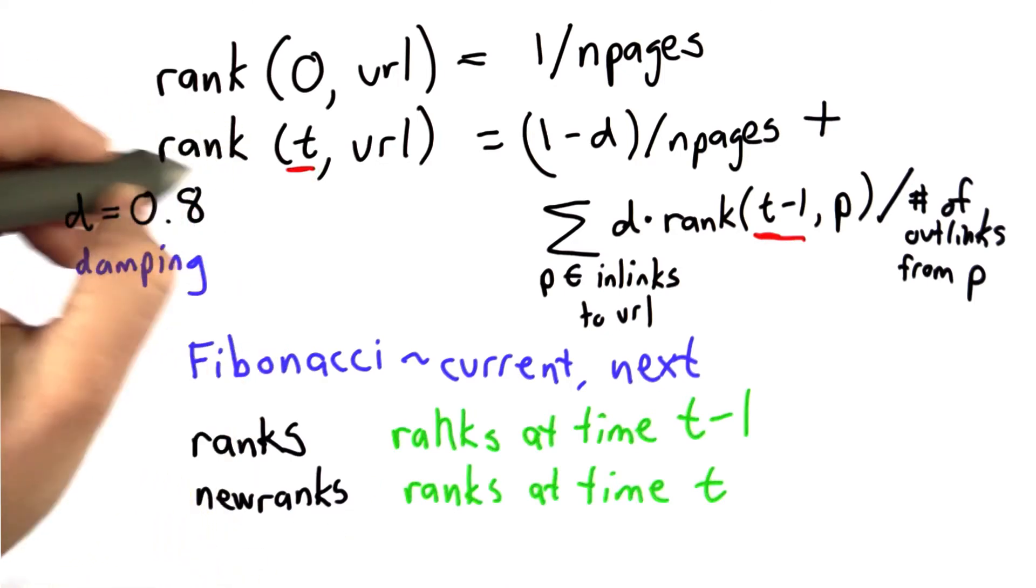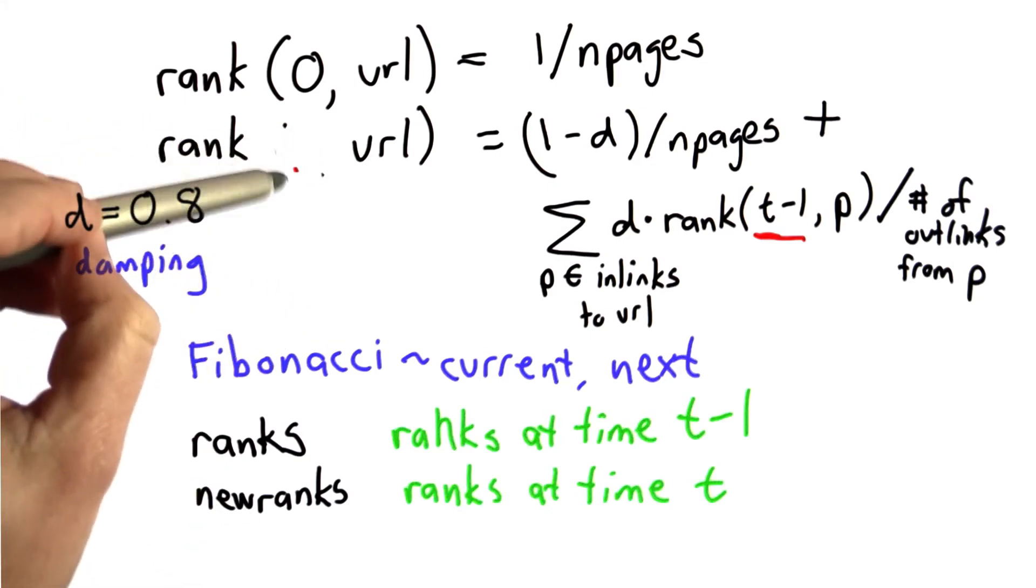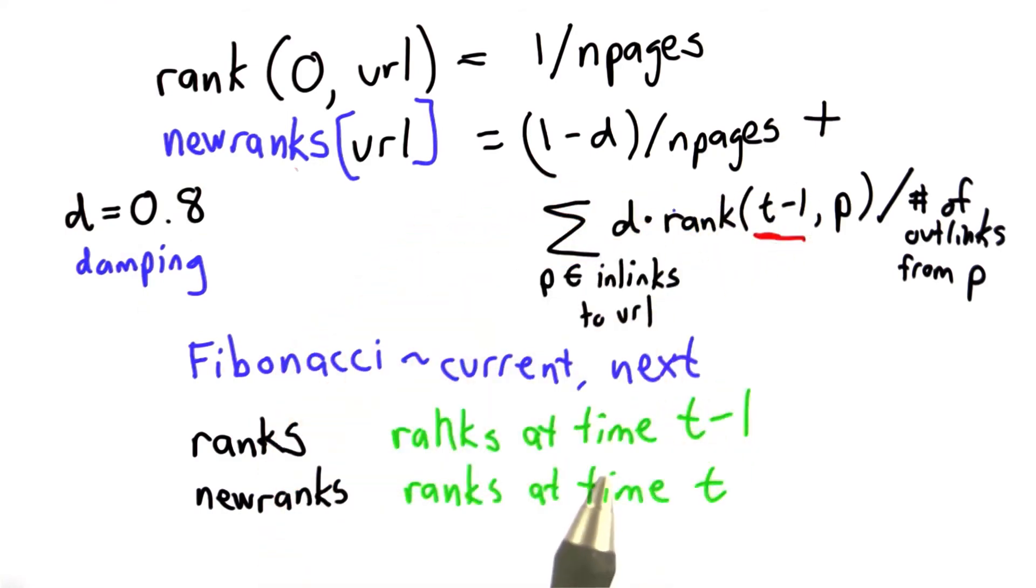What we're going to do is change this rank. The rank at time t is going to be the value of newrank, and the value of rank at time t minus 1, that's the value of ranks.